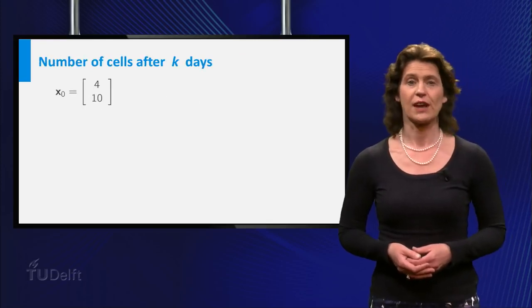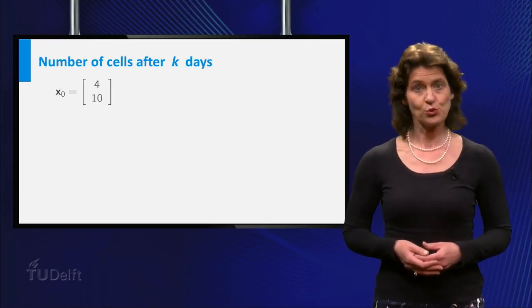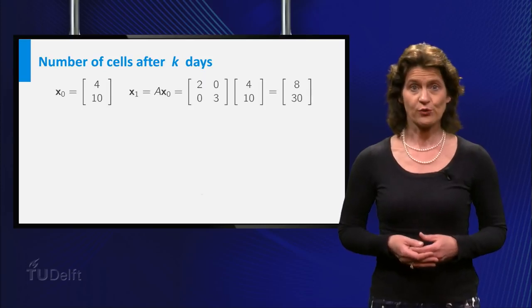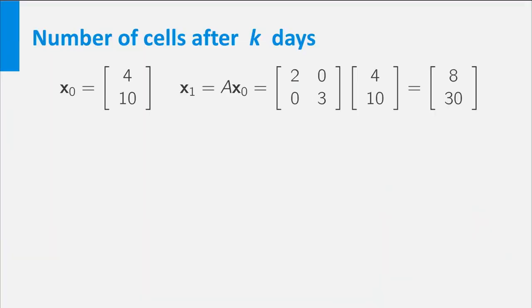Starting with 4 cells of type 1 and 10 cells of type 2, the number of cells of each type on the first day is equal to x1, which is equal to A times x0. After 2 days it is A times x1.